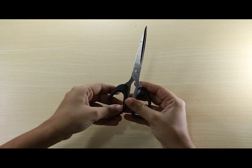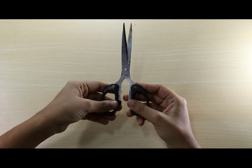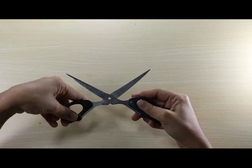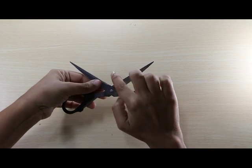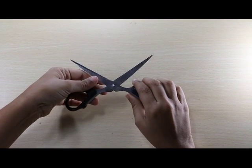Even objects around us can show vertically opposite angles. For example, when I open a pair of scissors, the angles formed on either side are equal to each other. They are vertically opposite angles.